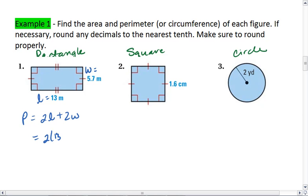I get 2 times 13 plus 2 times 5.7, not 57. That was my mistake. 2 times 13 is 26. 2 times 5.7 is 11.4.